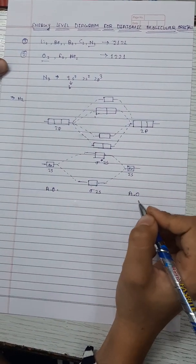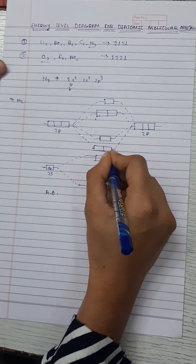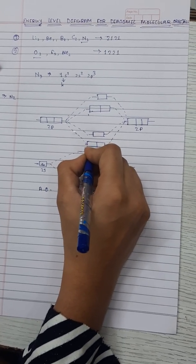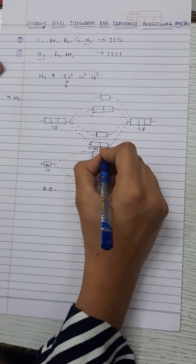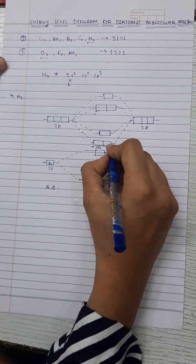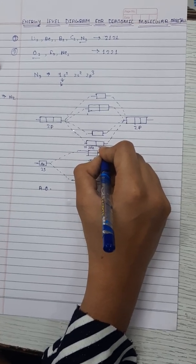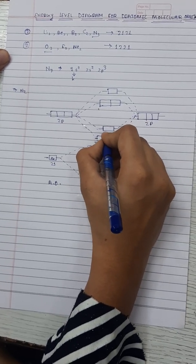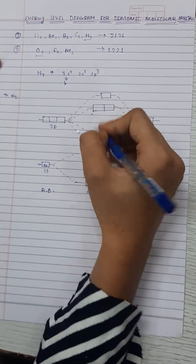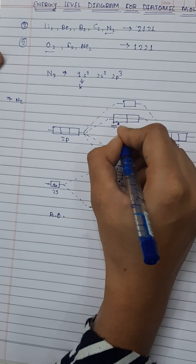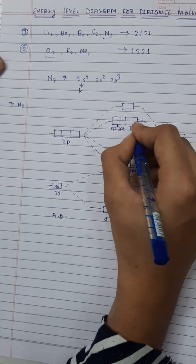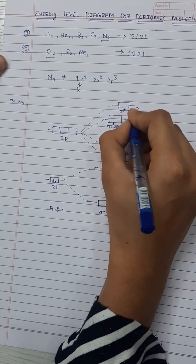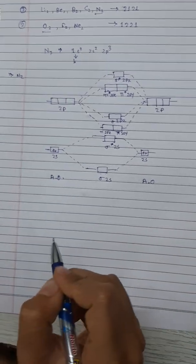The pi 2px orbital involves lateral overlapping and is always in a pair. So we have pi 2px and pi 2py as bonding orbitals, sigma 2pz as a bonding orbital, then the antibonding orbitals: pi star 2px, pi star 2py, and sigma star 2pz.